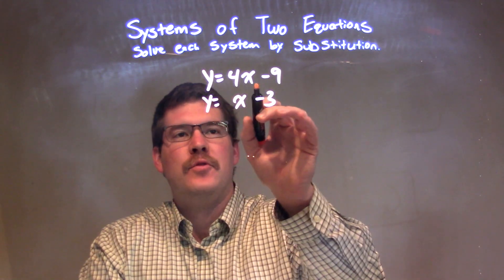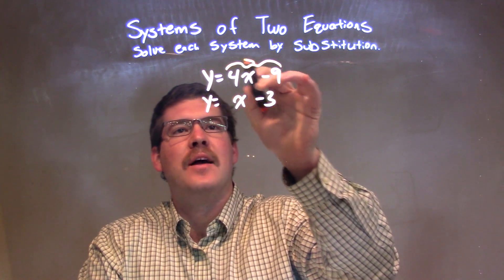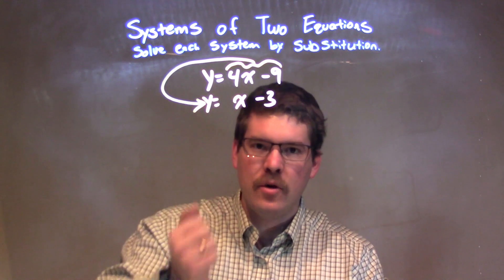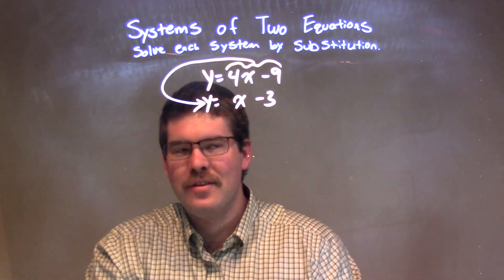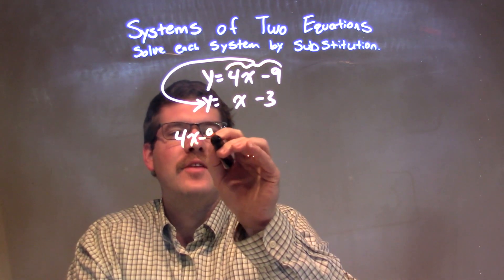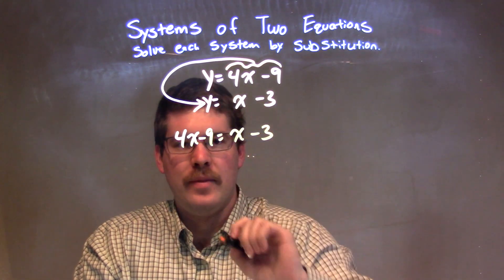So, since y is equal to 4x minus 9, I'm going to take that 4x minus 9 and substitute it in for the other y in the other equation. Since y can equal it, I can substitute that in, hence the method. So, we have 4x minus 9 here, instead of that y, equals x minus 3.